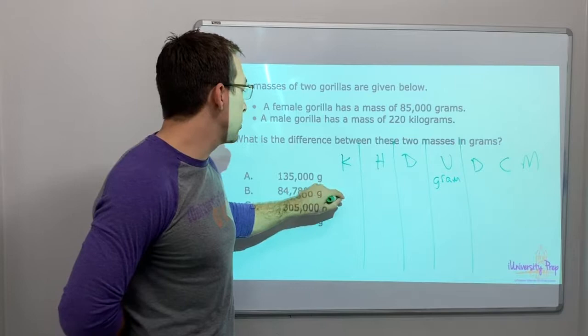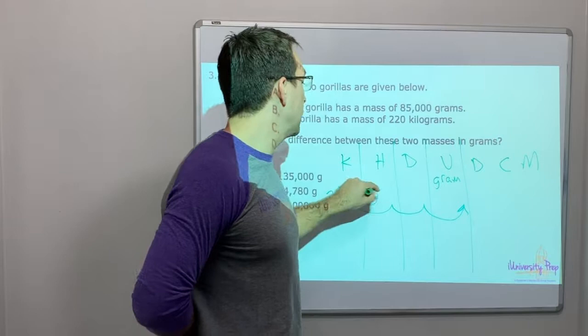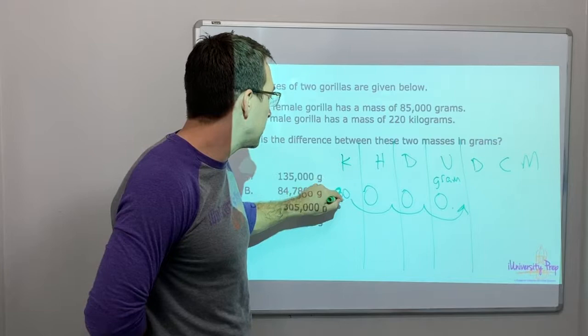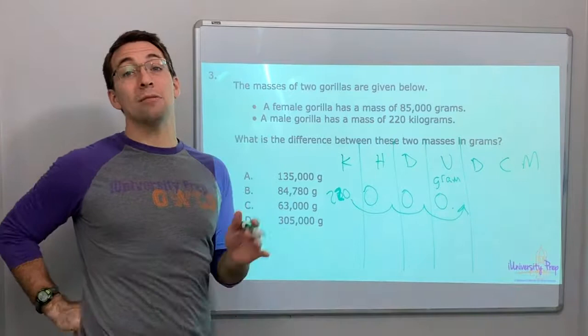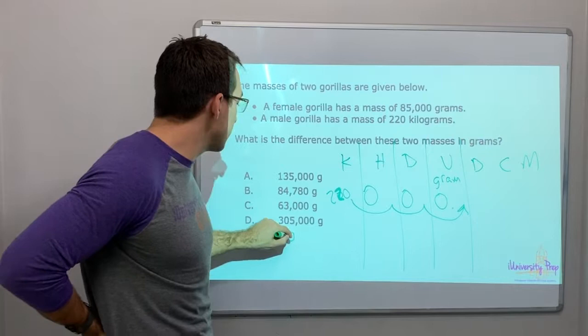And we're going to grams because here's our unit. So we have 220. We're starting with 220. And we go one, two, three. So add three zeros. 220. Sorry. Not 200. But 220,000. 220,000 grams.